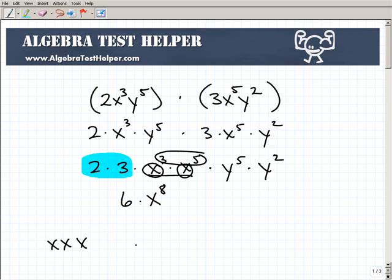So that'll be multiplied by—right here I have y to the fifth times y to the seventh. Once again, same base, so I just add the exponents, so that'll be y to the seventh. So my final answer will be 6x to the eighth y to the seventh.